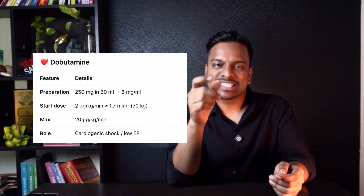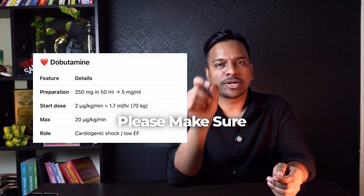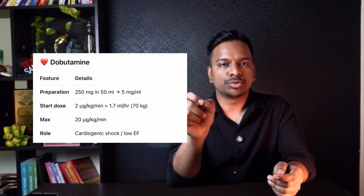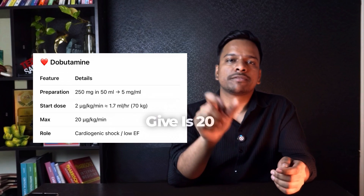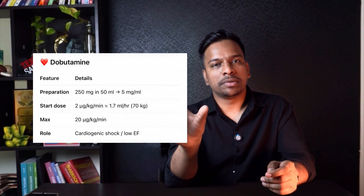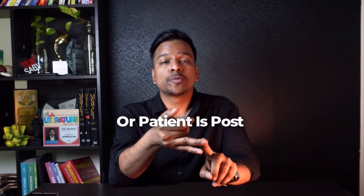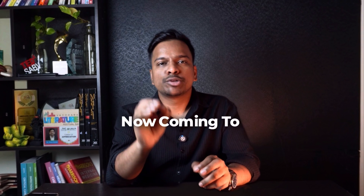Don't worry — all these starting doses I will mention in the description, please make sure you read that too. Maximum dose of dobutamine we can give is 20 micrograms per kg per minute. If a patient is having low cardiac output, or is post-myocardial infarction, or is having severe heart failure, then dobutamine will improve the cardiac output.